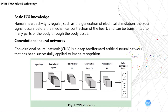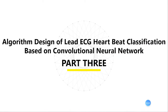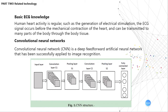Convolutional neural network, abbreviated as CNN, is a deep feedforward artificial neural network that has been successfully applied to image recognition. The input of each neuron is locally connected to the previous layer, so the local features of this part can be extracted. Once local features are extracted, it is possible to determine the positional relationship between these features and other features.